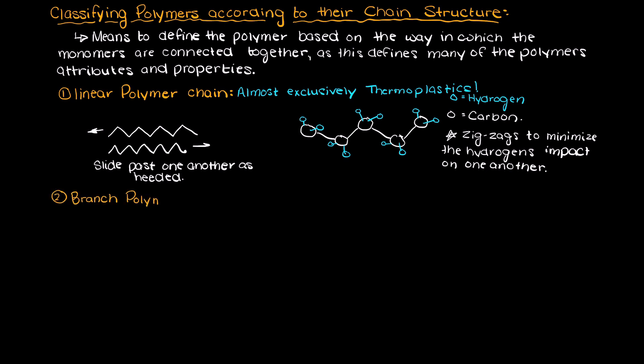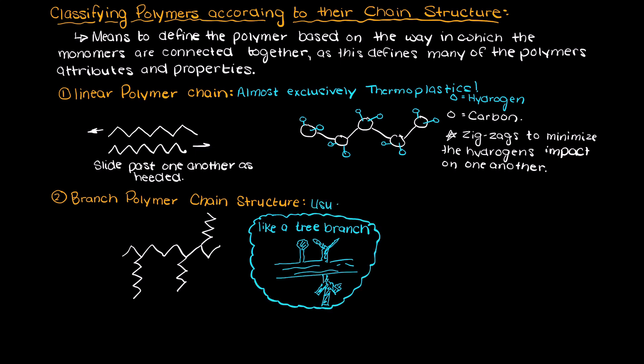Secondly, we could have a branched polymer chain structure. This means that the main linear polymer chain now has some branches of monomers off of it. Think of this being like a tree branch for example. Many branched polymer chain structures also fall into the thermoplastics category.